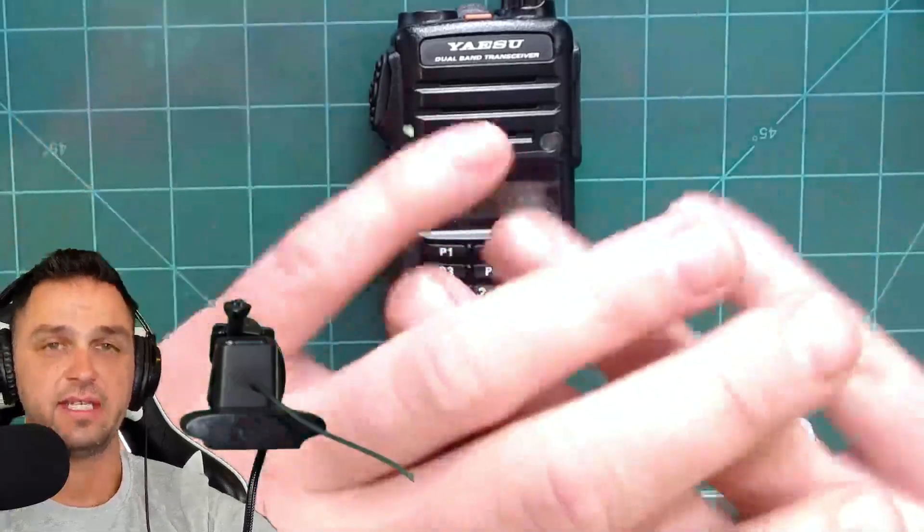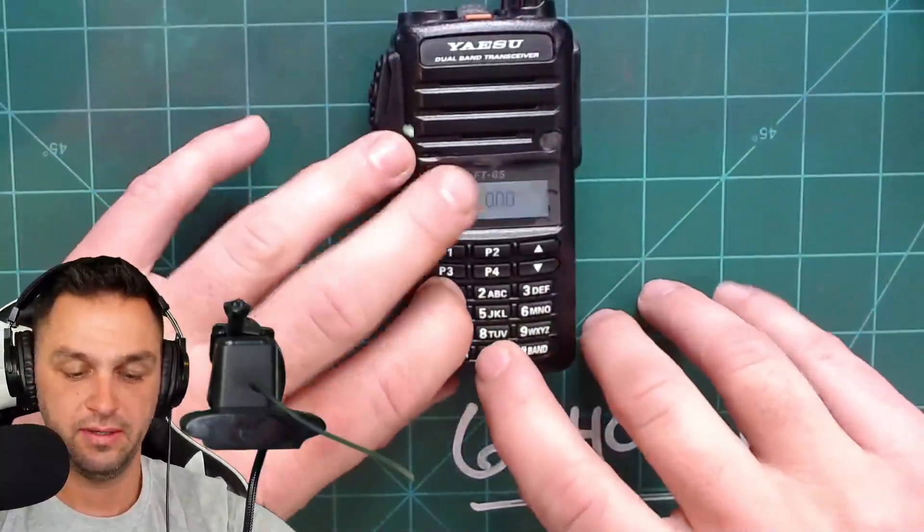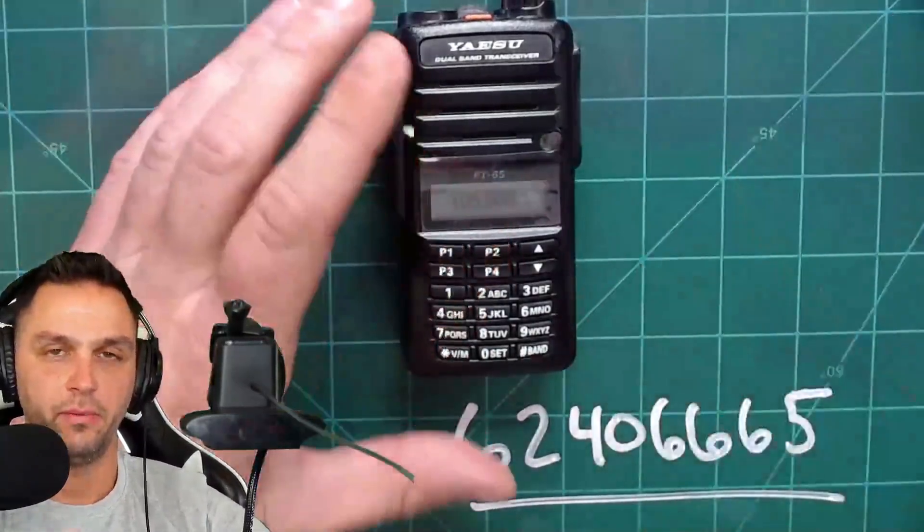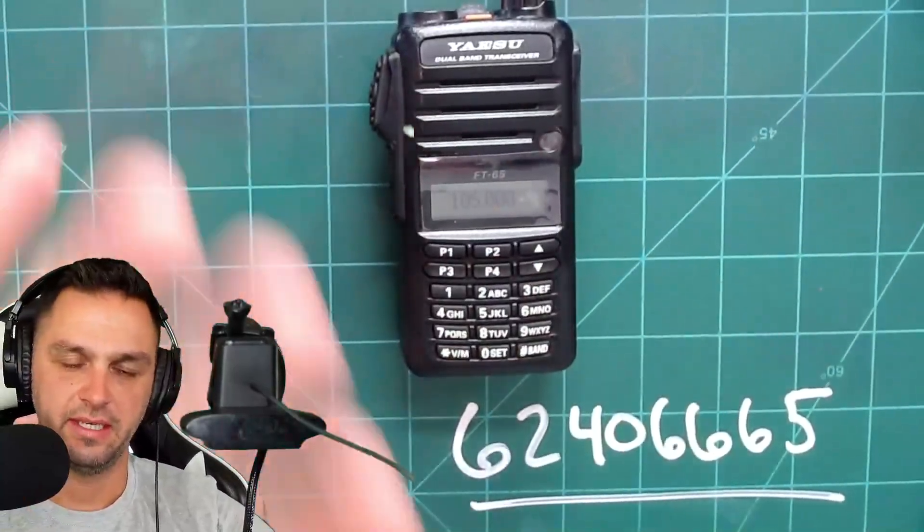And even then, this doesn't have unlimited possibilities. So for example, you can't transmit on FM radio stations or something like that. It's still going to say there's an error. I just wanted to make you aware of that, but it will allow you to transmit out of band slightly for whatever reason.